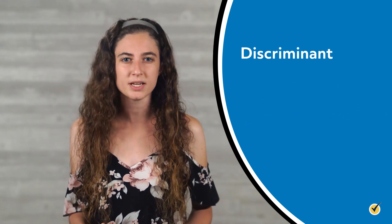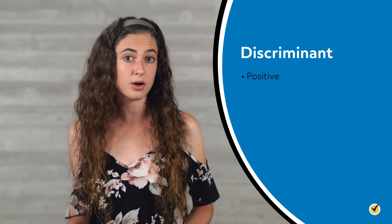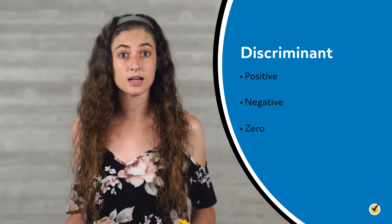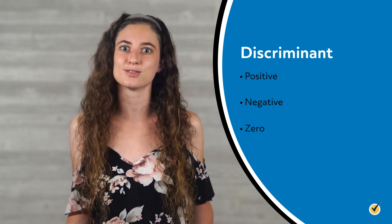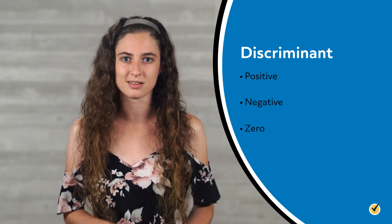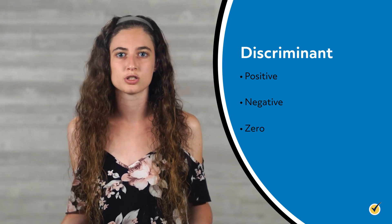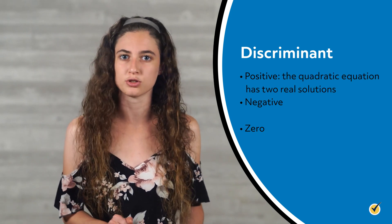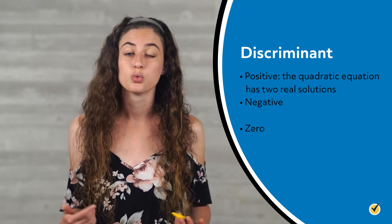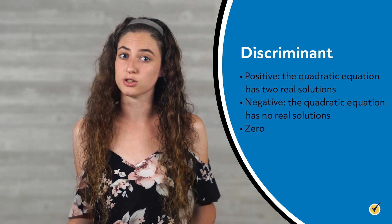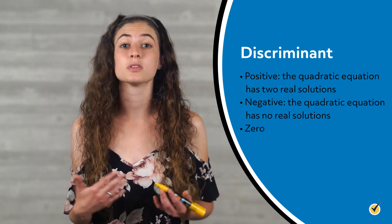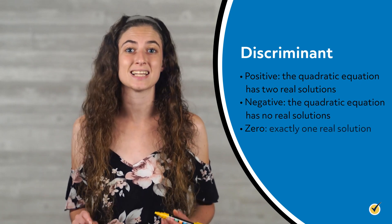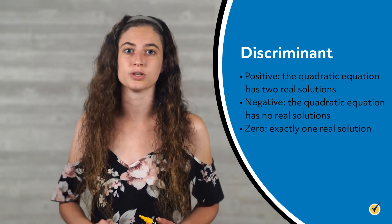When simplified, the discriminant can be a positive number, a negative number, or 0, and its sign tells us how many solutions the quadratic equation has. When the discriminant is positive, the quadratic equation has two real solutions. When it's negative, it has no real solutions. And when the discriminant is 0, the quadratic equation has exactly one real solution.